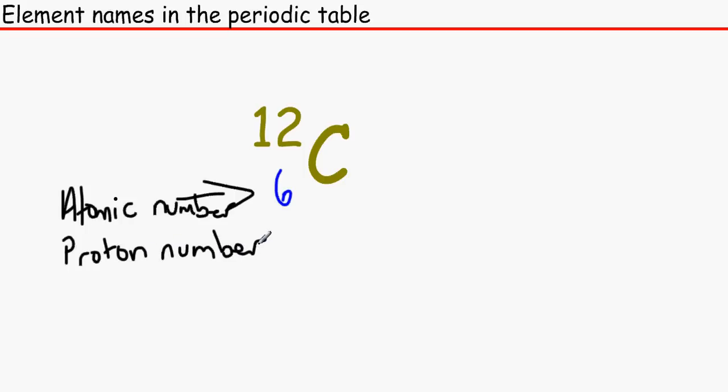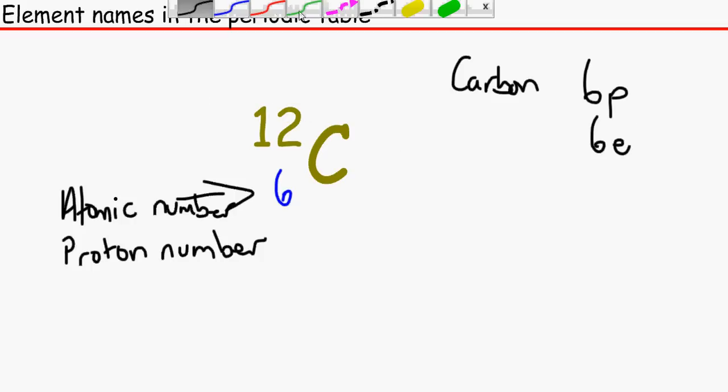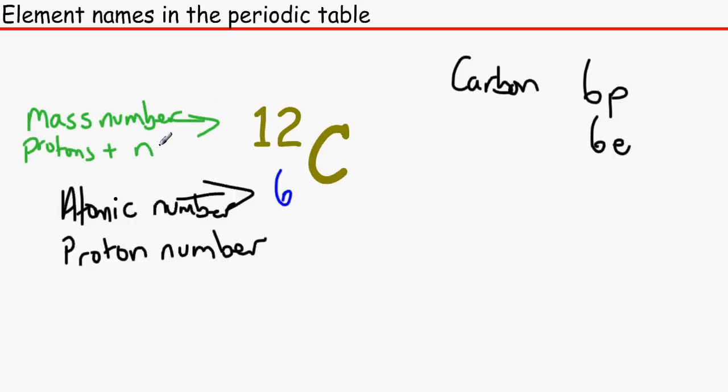Also, this can be the electron number if this is not an ion. We'll get to ions in a minute, but at this current moment, since this is not an ion, as in no electrons have been lost or gained, we can say that this is the proton number and it is also the electron number. So we're saying that carbon has 6 protons, 6 electrons so far. This 12 over here is called the mass number. This is the proton plus the neutrons.